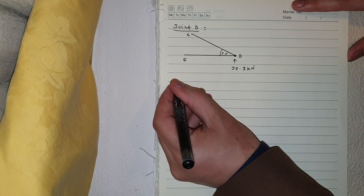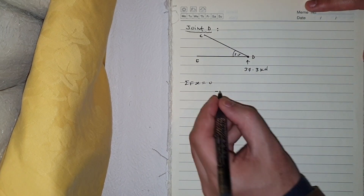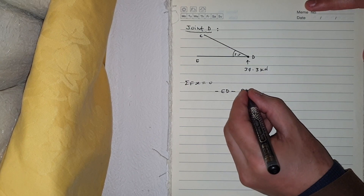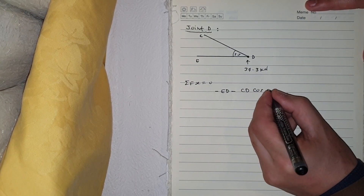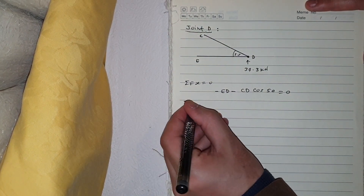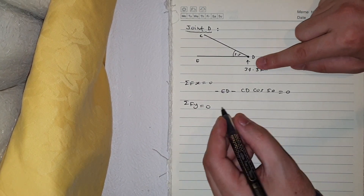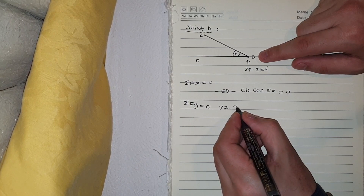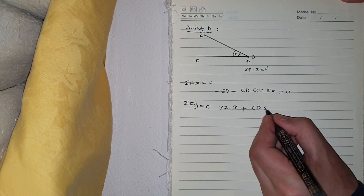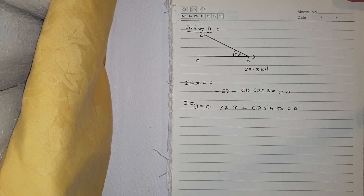Summation of Fx equals zero: I have minus ED, minus CD cosine of 50 degrees, that will be equal to zero. Next step, take summation of Fy equals zero: I have positive 37.3 plus CD sine of 50 degrees, and that will be equal to zero.